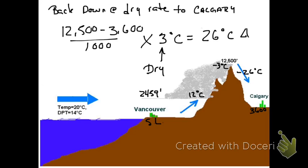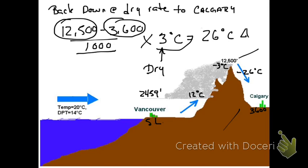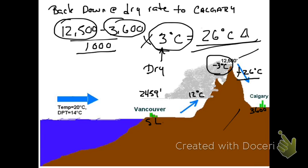Going back down the mountain on the east side, the air has compressed and dried, so we apply the dry adiabatic lapse rate. Going from 12,500 feet to 3,600 feet: 12,500 minus 3,600 divided by 1,000, times 3 degrees Celsius, gives a temperature change of 26 degrees Celsius. Adding negative 3 degrees Celsius at the mountaintop to 26 degrees Celsius gives an estimated temperature at Calgary of 23 degrees Celsius.